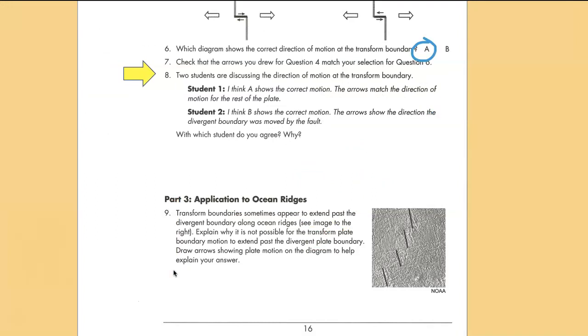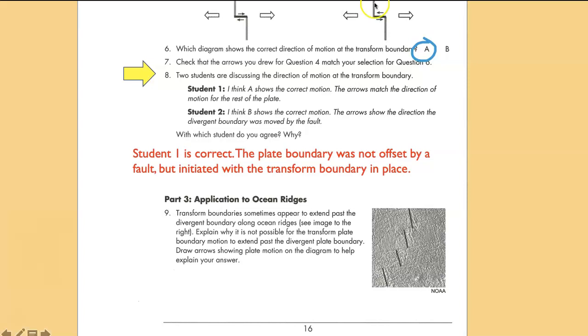Now two students are discussing this. One of them thinks A is right, one of them thinks B is right. It turns out student 1 is correct. If this divergent zone was originally straight and continuous and then offset by a fault, then yes, that would be correct. But this transform boundary developed at the same time that the divergent boundary formed. It's always been there. So student 1 is correct.